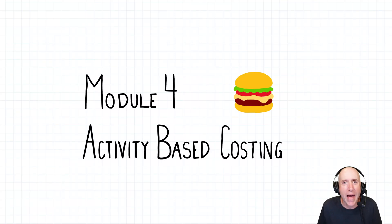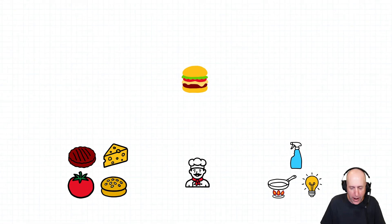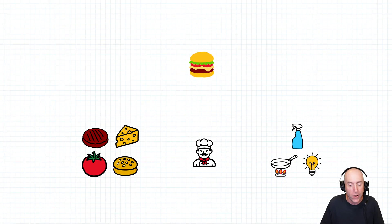Welcome back to our course in Management Accounting and welcome to Module 4, Activity-Based Costing. Let's return to our hamburger and figure out the components of the cost. At this point, you should have it locked down.